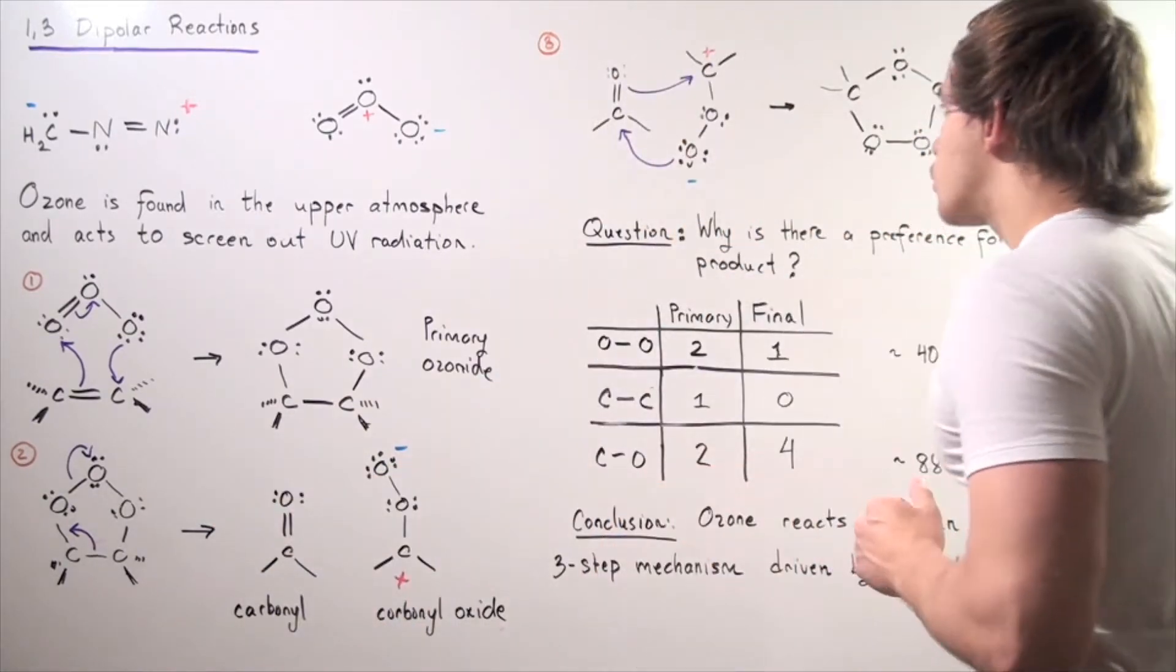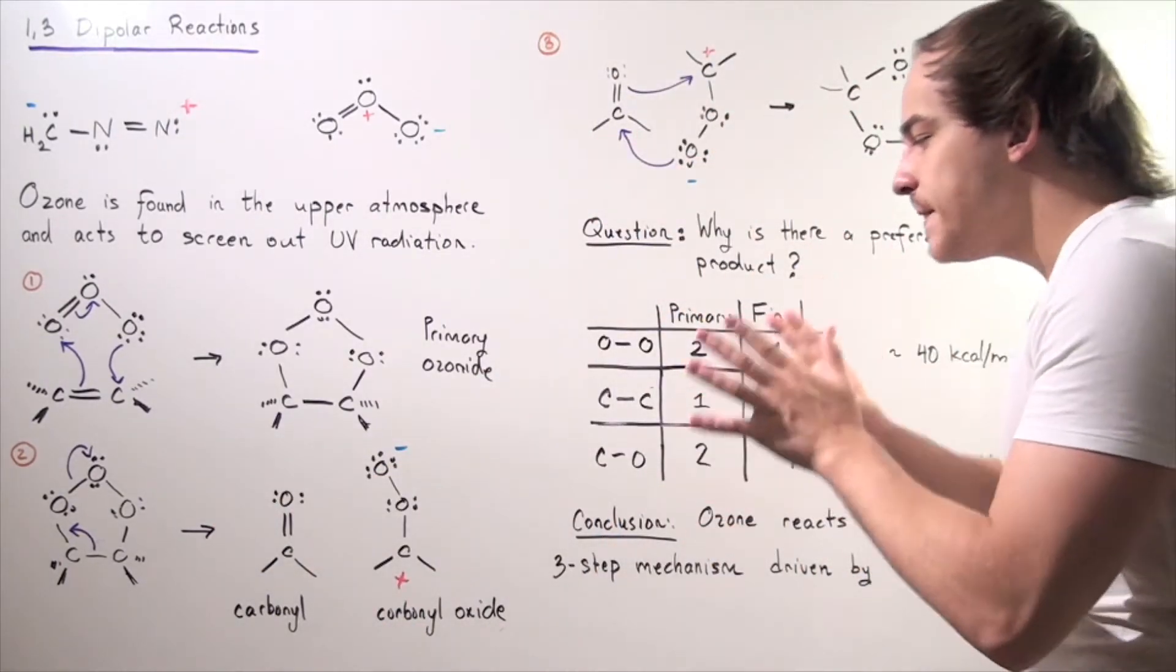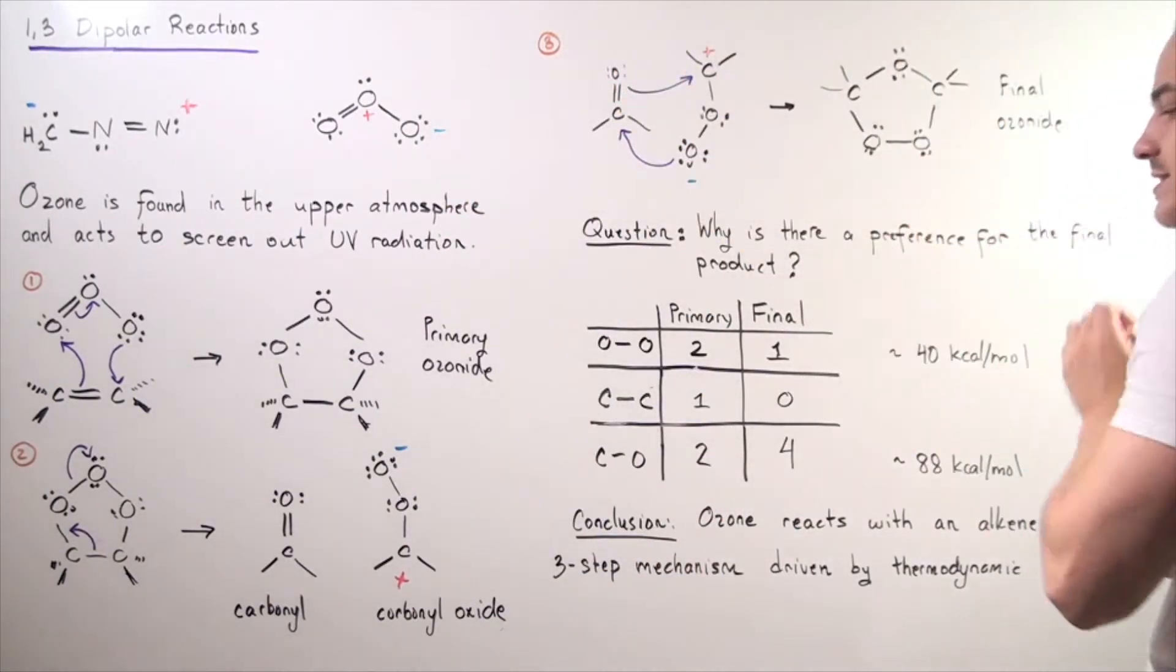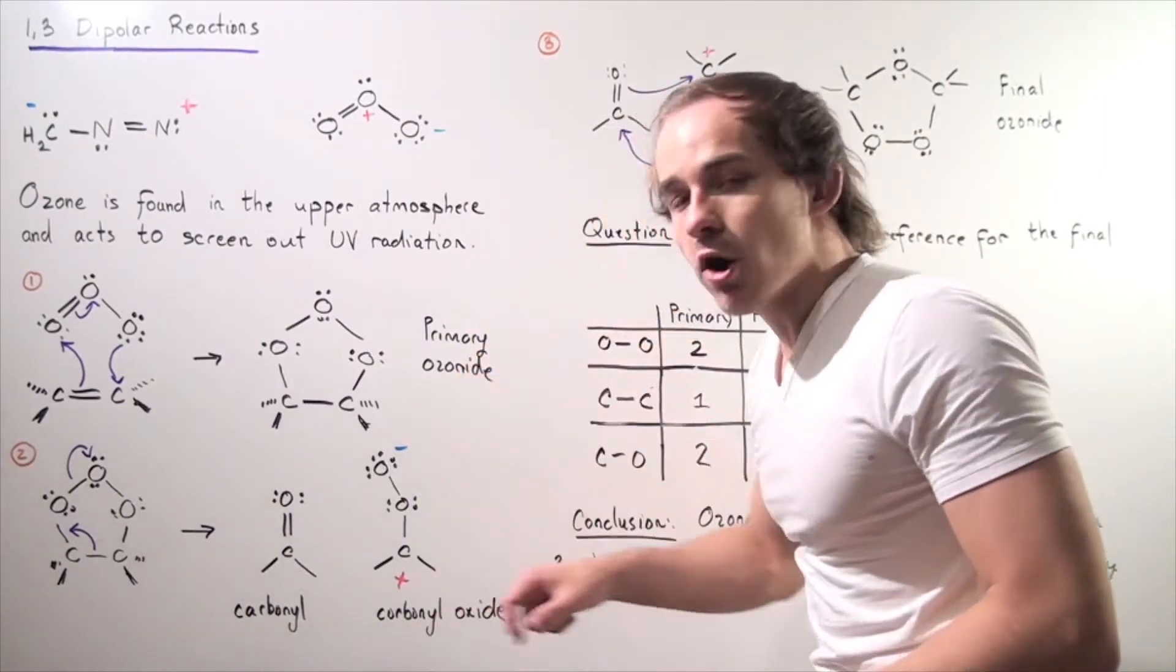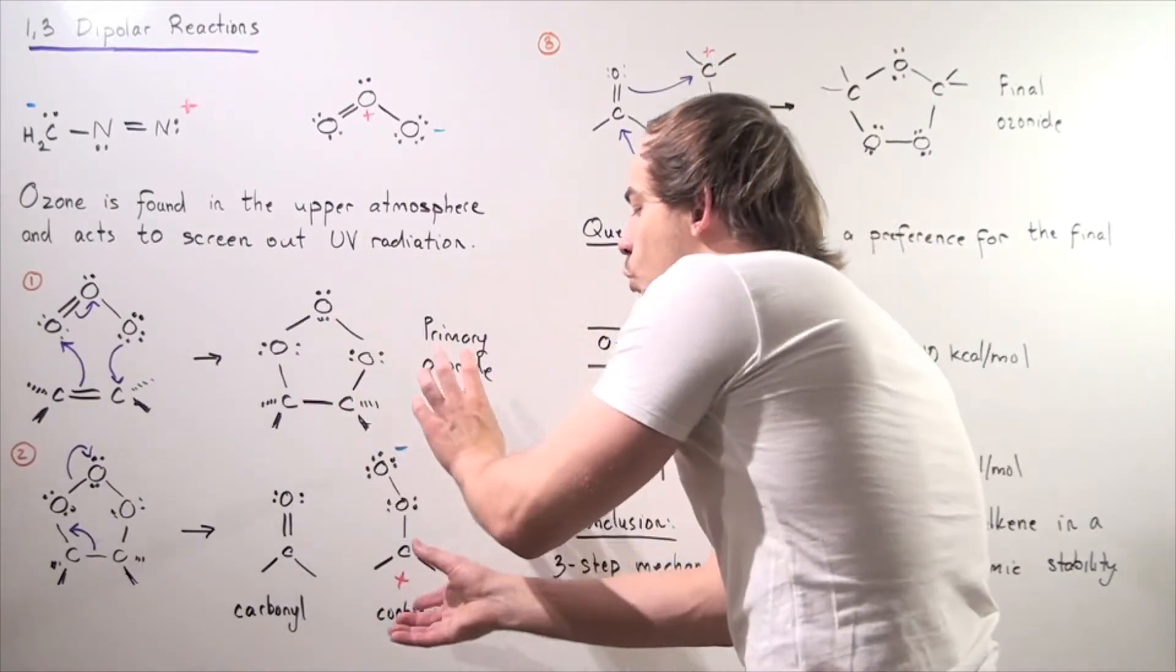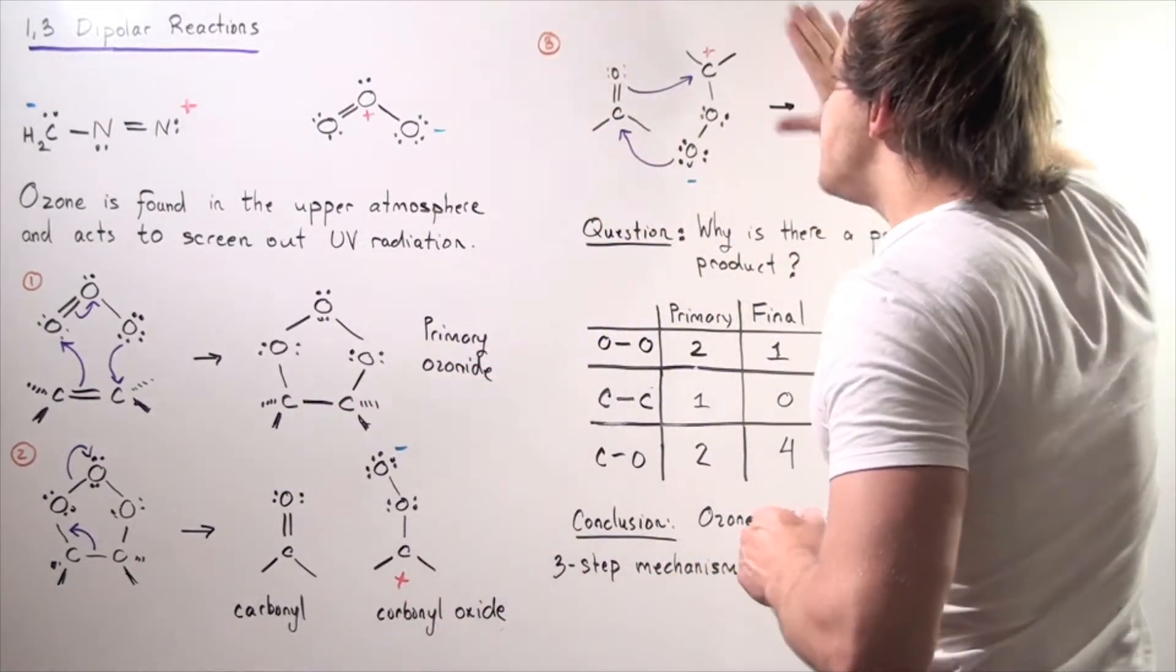So, before we look at the third step, something must take place in order for this reaction, the third step, to take place. What happens is this molecule, the carbonyl oxide, flips. It flips in such a way so that we have a good stereochemical arrangement.